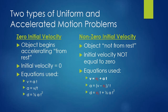Zero initial velocity is when the object begins accelerating from rest — its initial velocity is zero. For non-zero, the object is already in motion, so its initial velocity is not zero. The only difference between the two sets of equations is the presence of V sub i — initial velocity — in the non-zero equations. In the zero initial velocity equations, V sub i equals zero, so we can remove it, simplifying those equations.